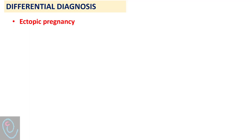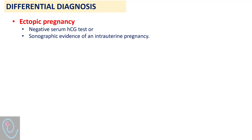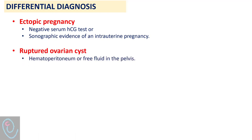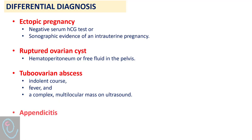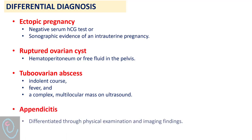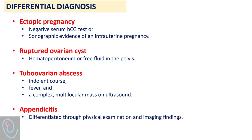The differential diagnosis of ovarian torsion includes ectopic pregnancy, which can be ruled out with a negative serum HCG and sonographic evidence of intrauterine pregnancy. A ruptured ovarian cyst is characterized by sonographic evidence of hemoperitoneum or free fluid in the pelvis. Tubo-ovarian abscess is another differential diagnosis; however, it has an indolent course with fever and a complex multi-locular mass on ultrasound. Appendicitis may have similar symptoms but can be differentiated through physical examination and imaging findings.